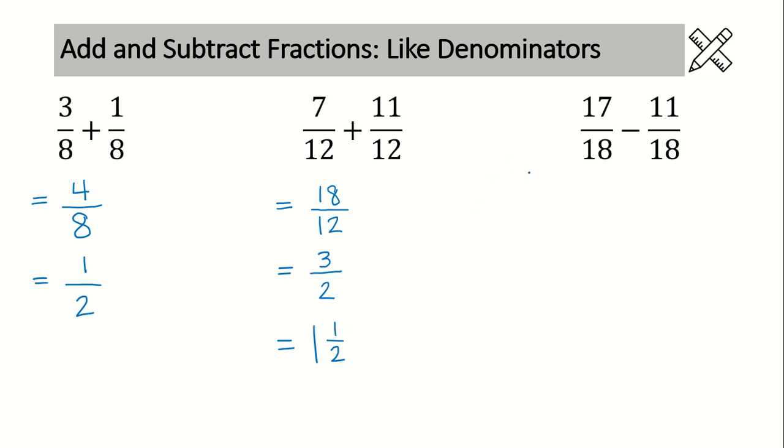Alright, in example number 3 we have our like denominators. So we can start to work down the page. We're going to put in our denominator of 18. Just a reminder, never add or subtract your denominators. Just your numerators. 17 minus 11 is 6.